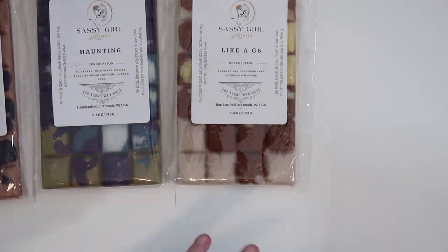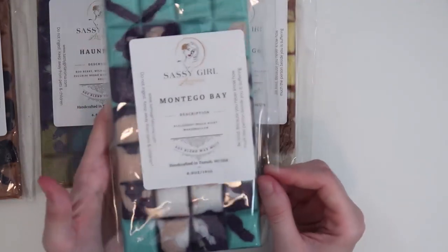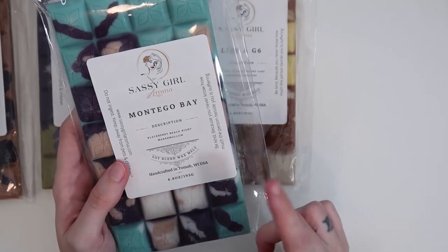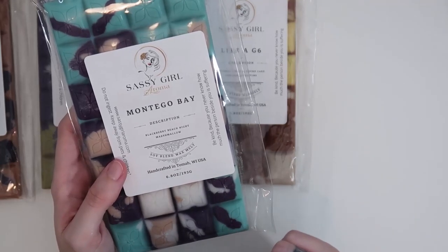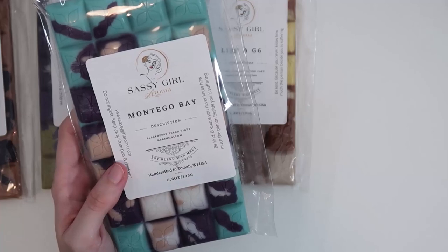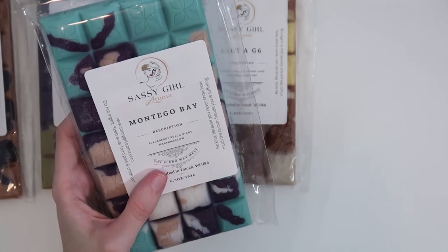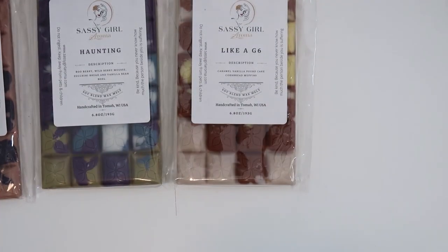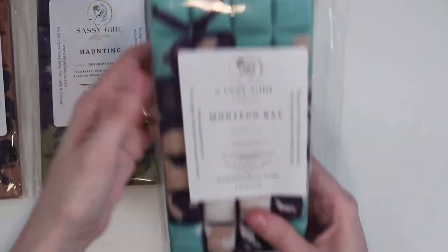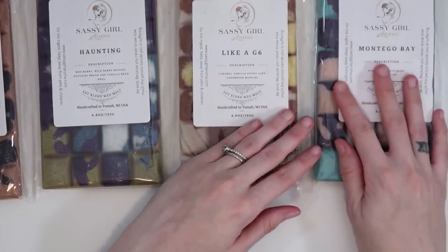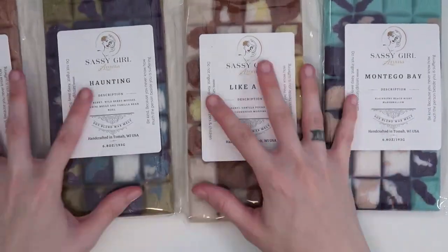This one's kind of an oddball. This one I wasn't originally going to get. So this is I think it's Montego Bay. Blackberry, Beach Night, and Marshmallow. I am obsessed with Sassy Girl Rona's Beach Night. I think it is so good. And then I love Blackberry. It's so refreshing and bright. And then Marshmallow is such a great scent as well. And this is fantastic. Her Beach Night is so good. The Blackberry is so bright and refreshing. Marshmallow is a base note. This smells amazing. I got to break up my bakery loving heart here.